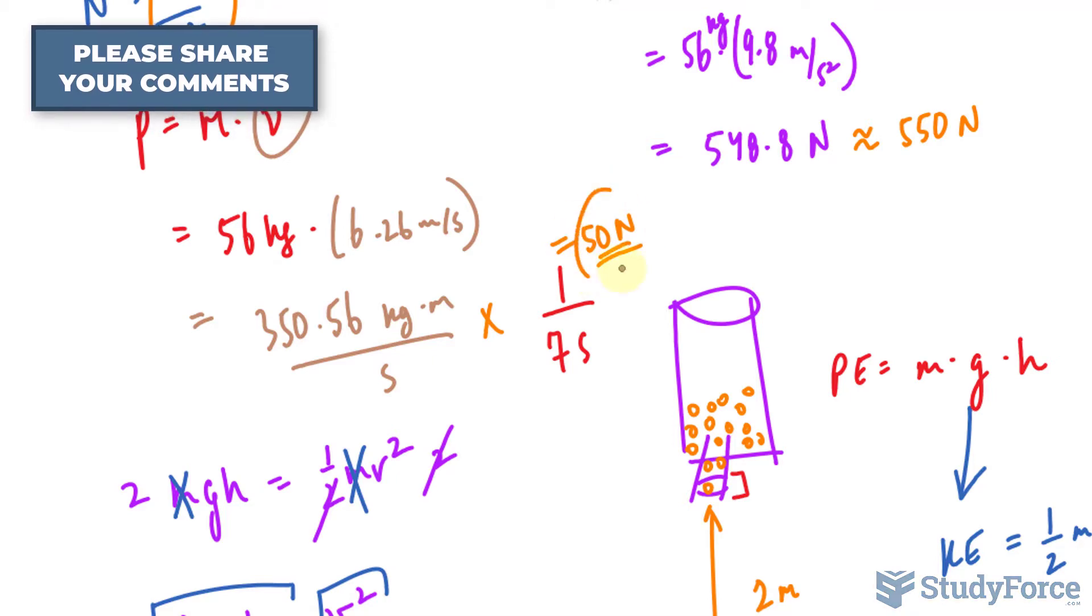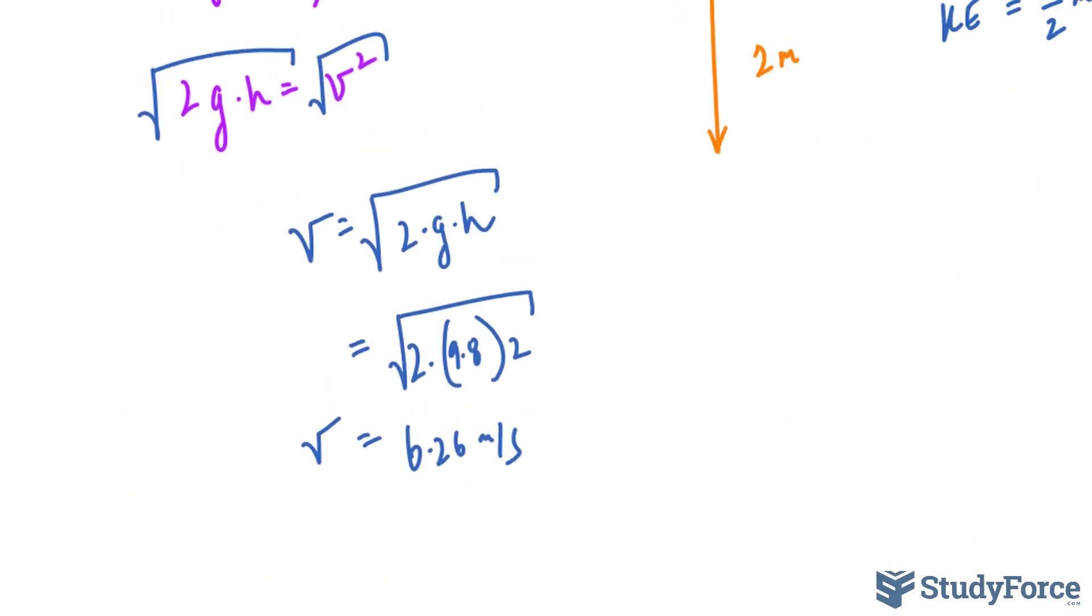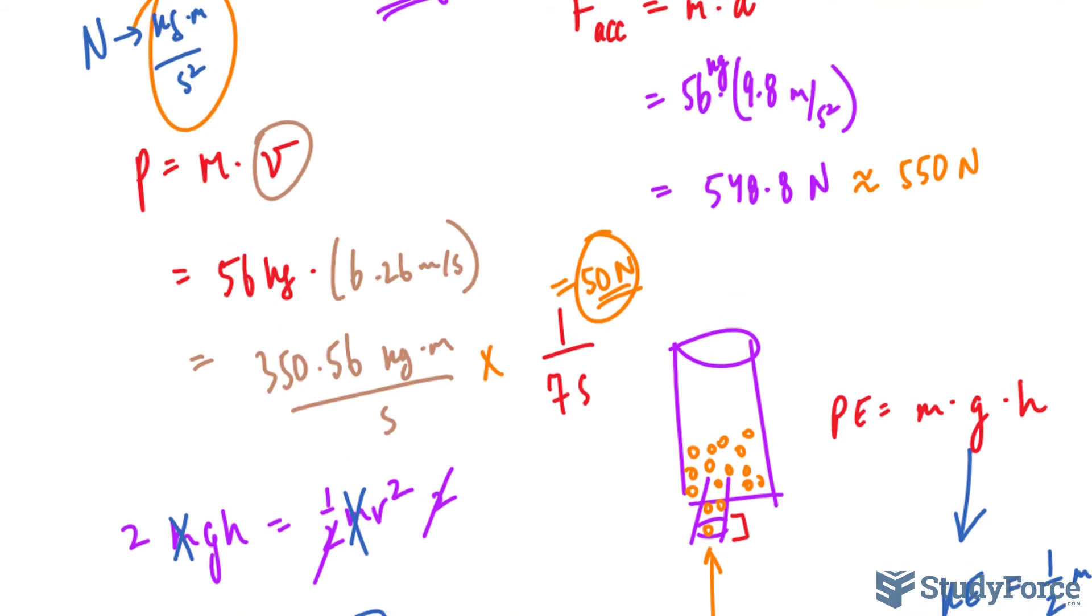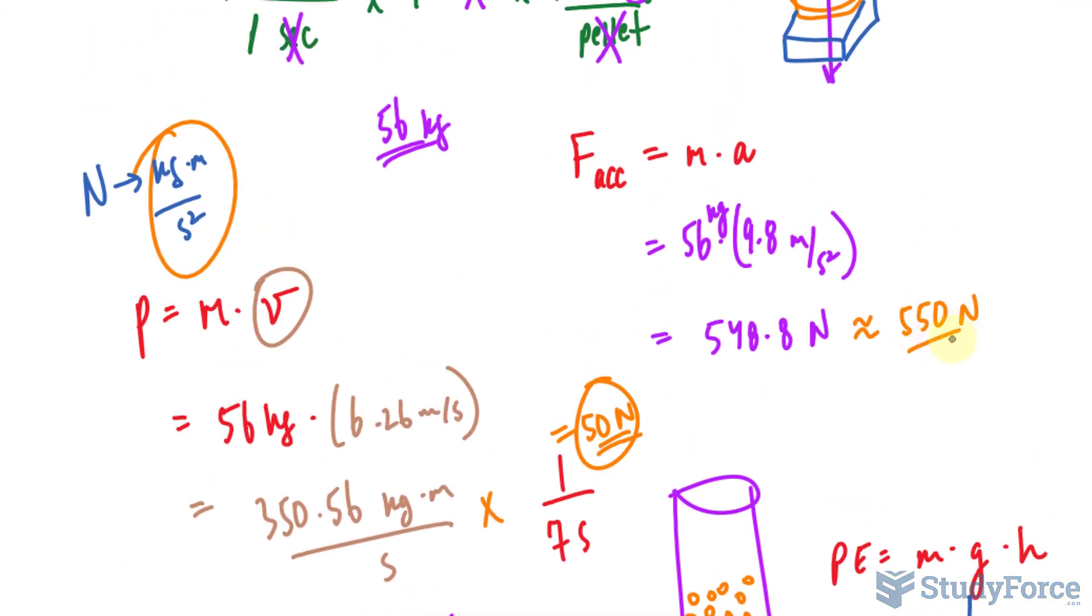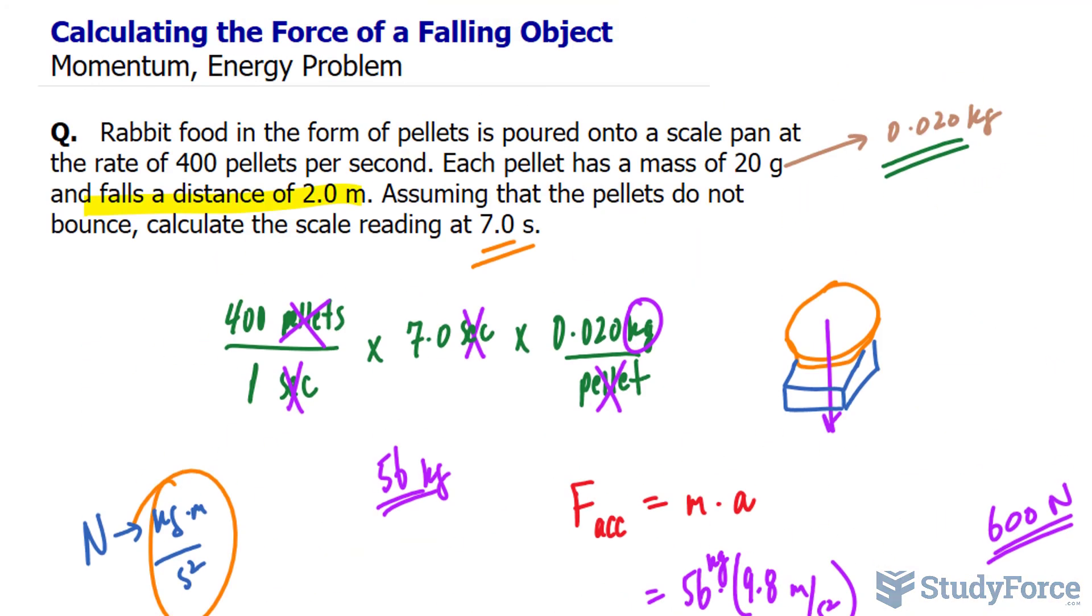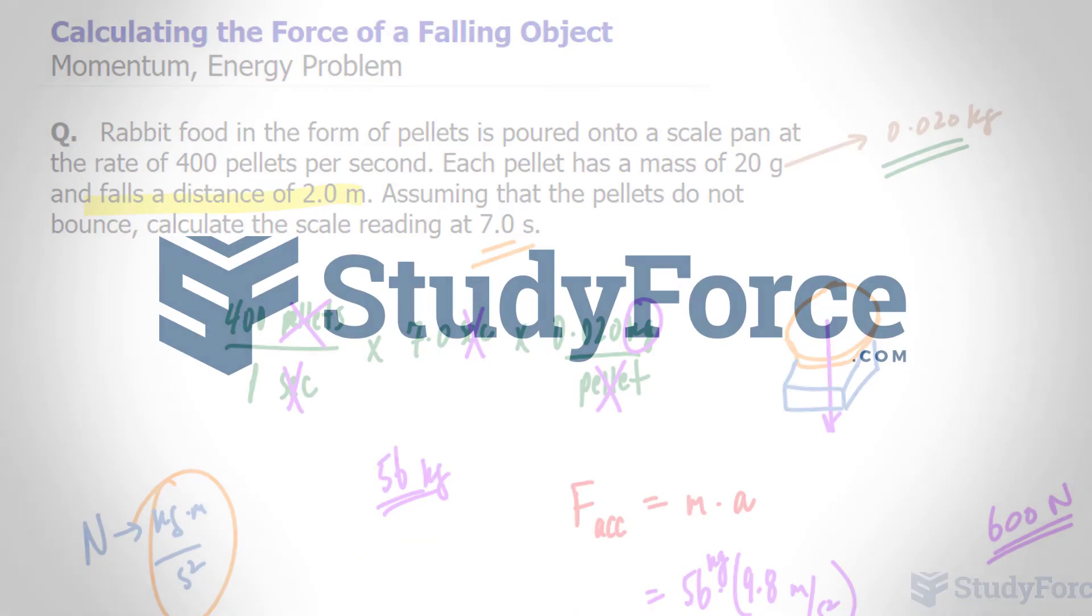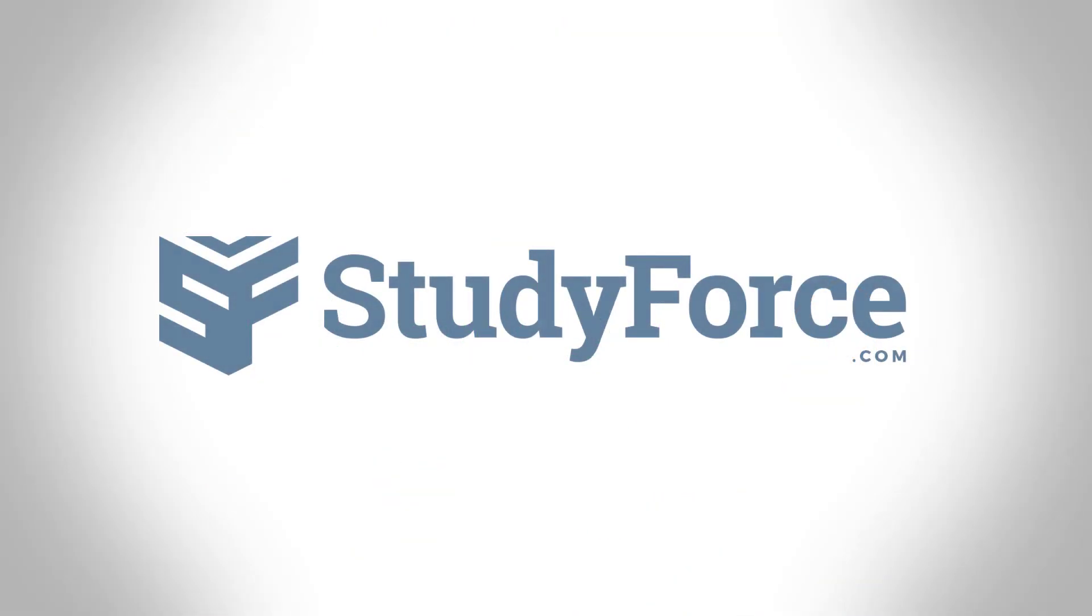The scale will read 50 plus the accumulated force of 550, which sums up to approximately 600. And there you have it. That is how to calculate the force of a falling object onto a scale.